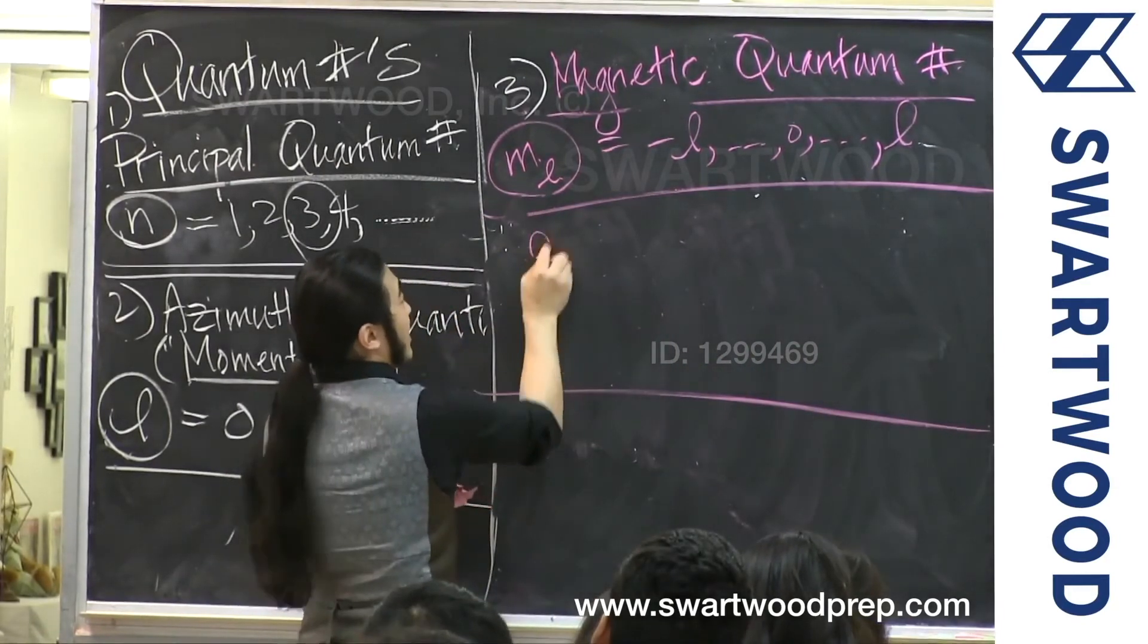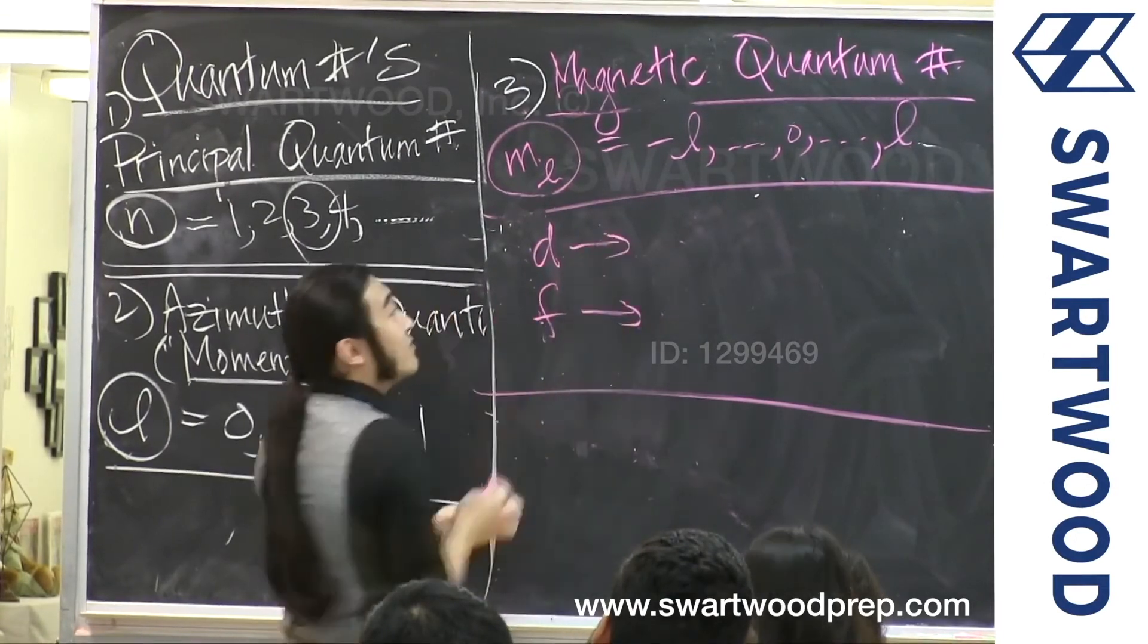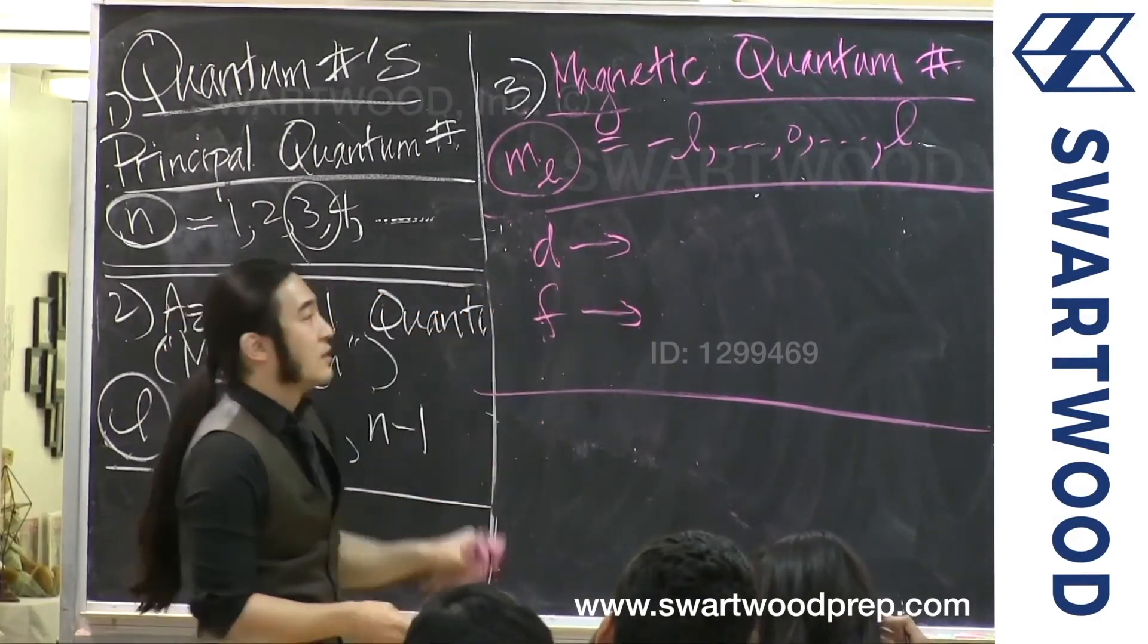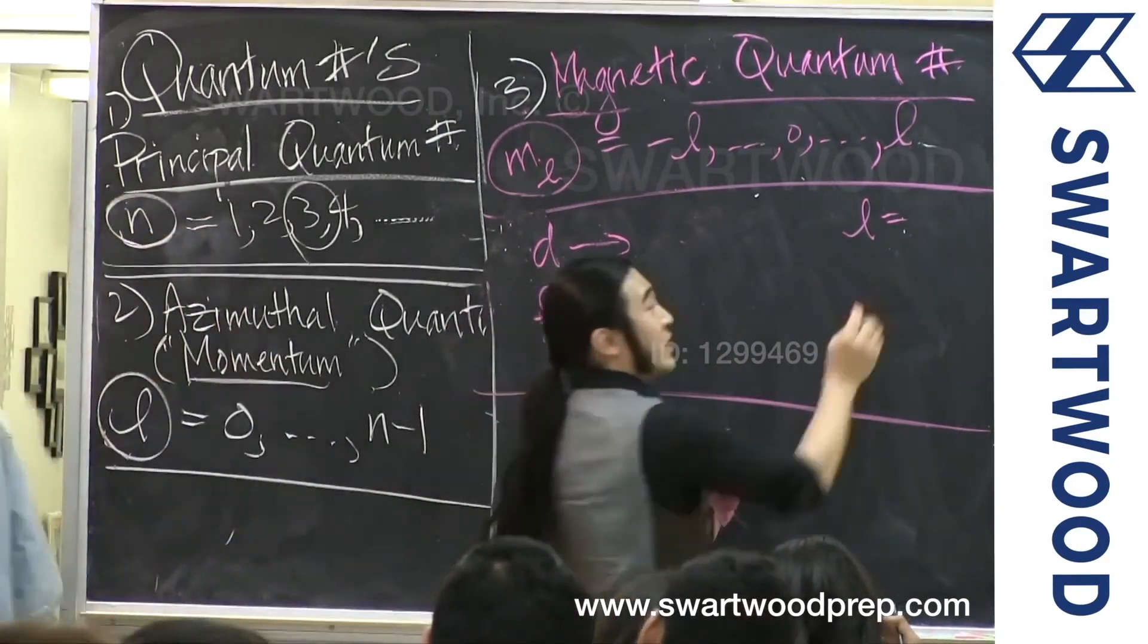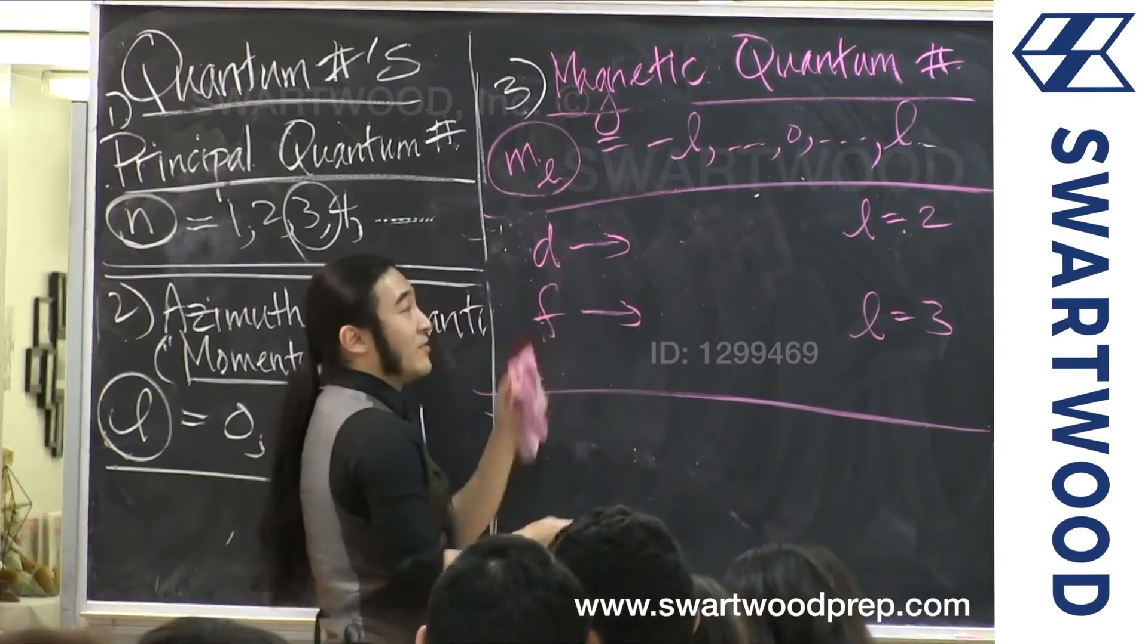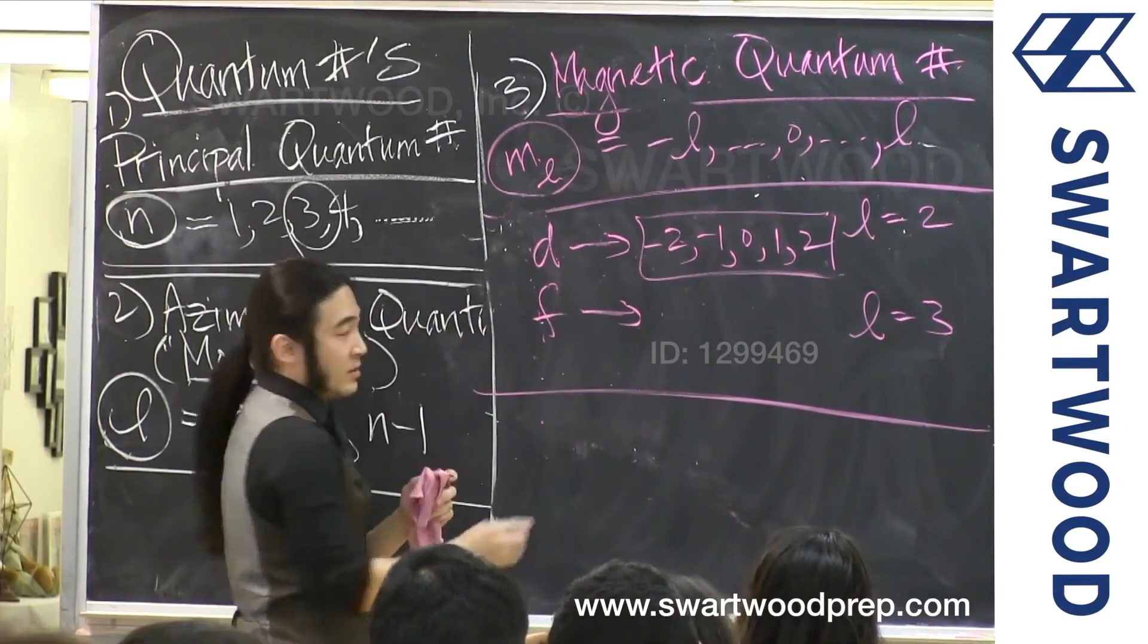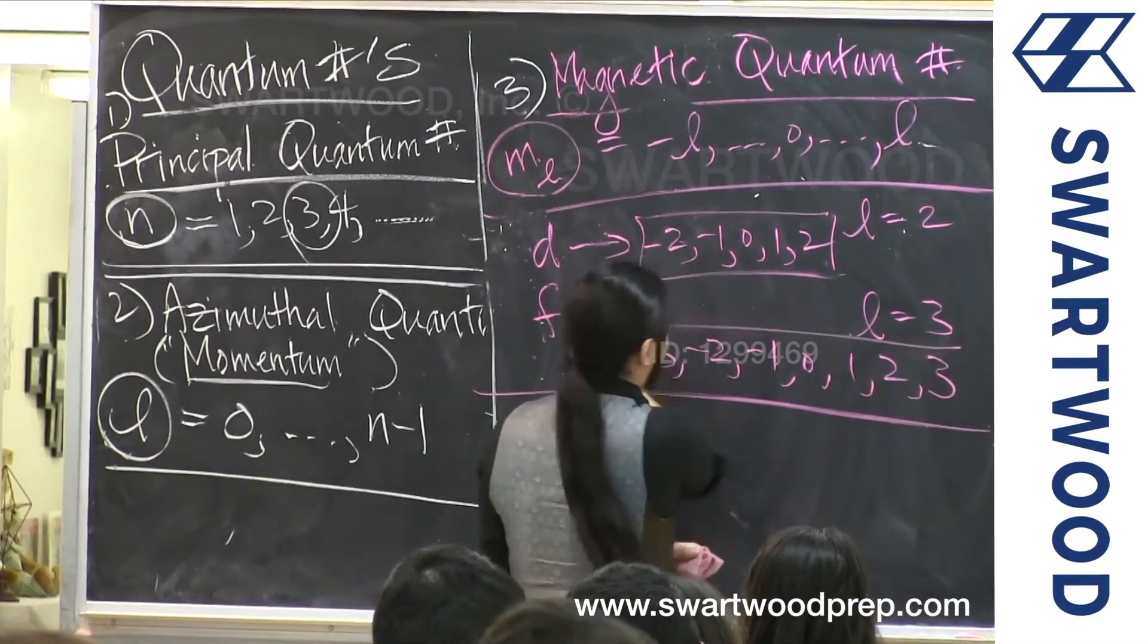But let's go ahead and do that. So let's talk really quickly about p, d, and f. Five seconds of this. First try the numbers game. What were the ml values for d? So remember we said the l value for d is 2. And for f it's 3. So the ml value should be what? Negative two, negative one, zero, one, two. And what would it be for f? Negative three, negative one, zero, one, two, and three.